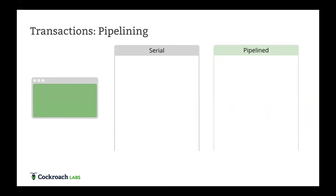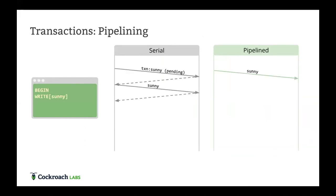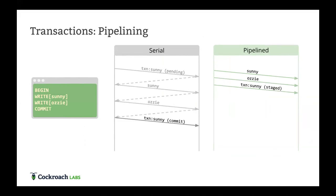Chris talked about pipeline and parallel commits. Typically a transaction has lots of back and forth: start transaction, it's pending, write Sunny, write Aussie back and forth. But what we're doing is taking Sunny, Aussie, and the transaction record and doing it all at once — giving it a staged status simultaneously. This dramatically reduces the round trips needed for a distributed transaction.